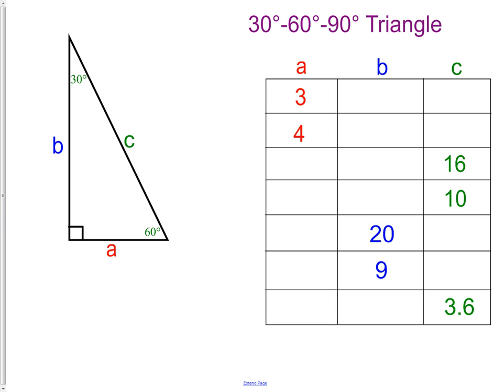Okay, let's fill in the table. For the first one, we know A. A is 3. That makes C 6. A and C have the relationship that the C, or the hypotenuse, is always double the short side, which in this case is the 3. This would be 8.